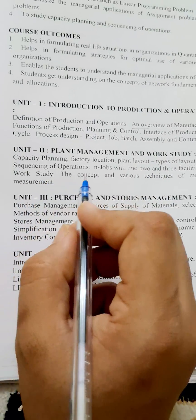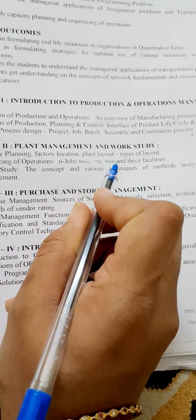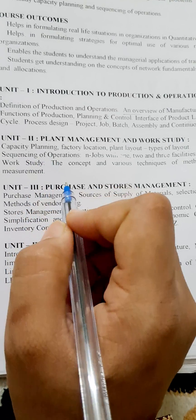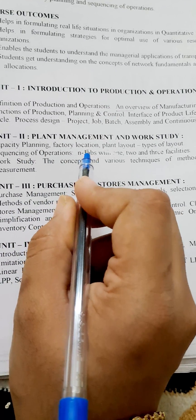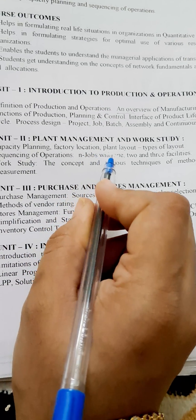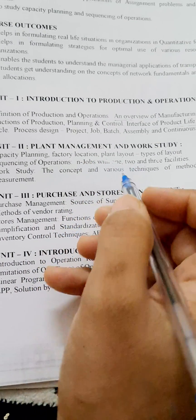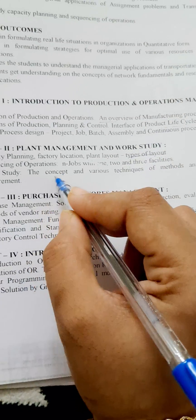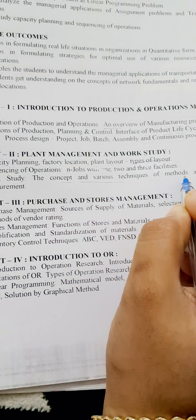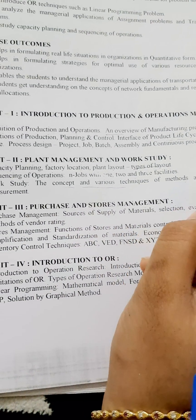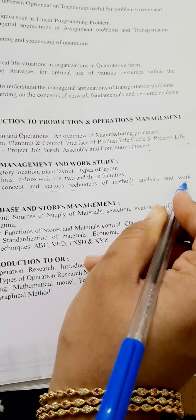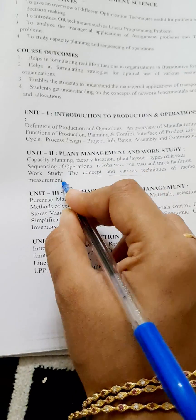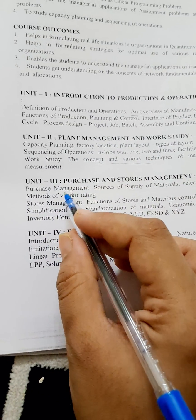In unit two, Plant Management and Work Study, you have capacity planning, plant layout, types of layouts — which is very important — and the concept and various techniques of method analysis and work measurement.